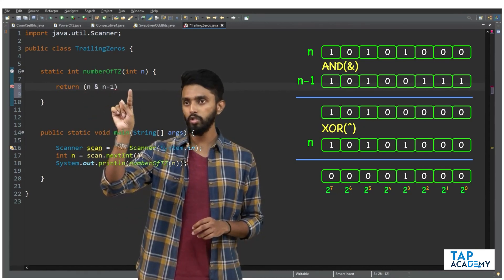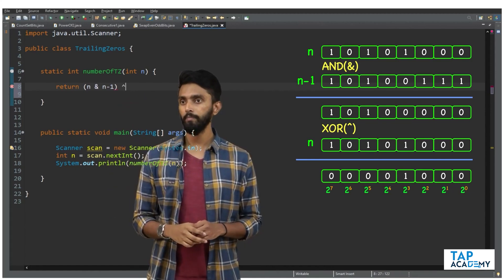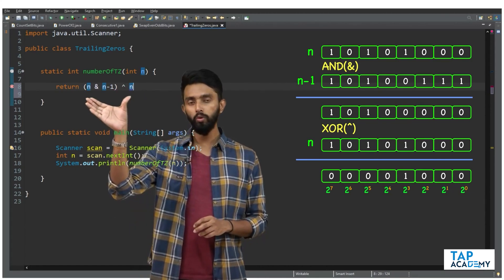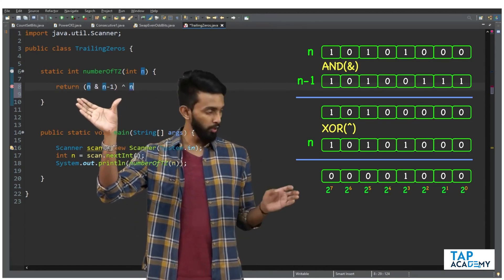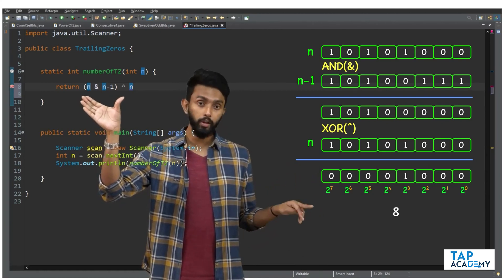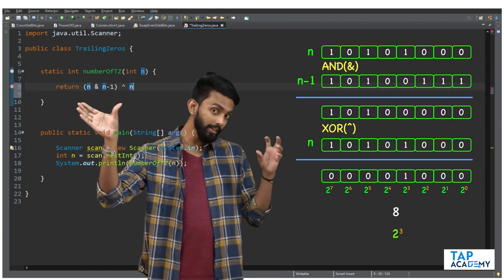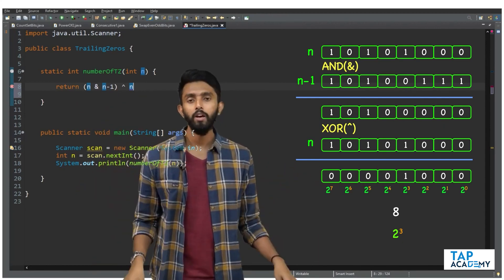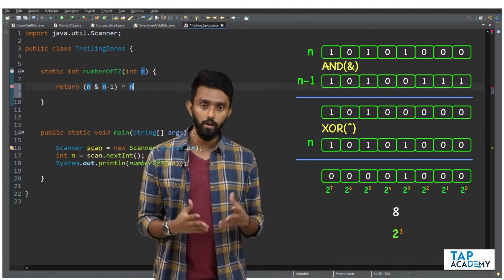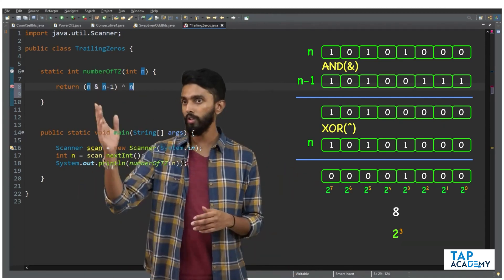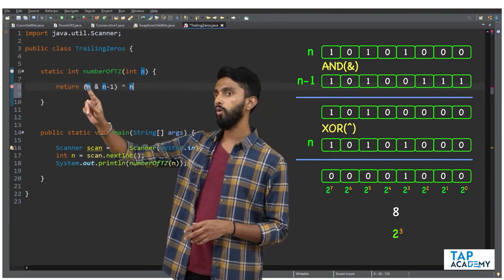Whatever you get as the result, XOR it with the original number n. Now if you do this you will get the decimal value 8, but you don't want 8, you want the power, 2 to the power 3. That 3 you want. So for that you apply the log logic.